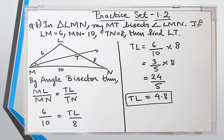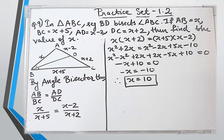Let's move on to question number 9. In triangle ABC, segment BD bisects angle ABC. AB is X, BC is X plus 5, AD is X minus 2, and DC is X plus 2. We have to find the value of X.